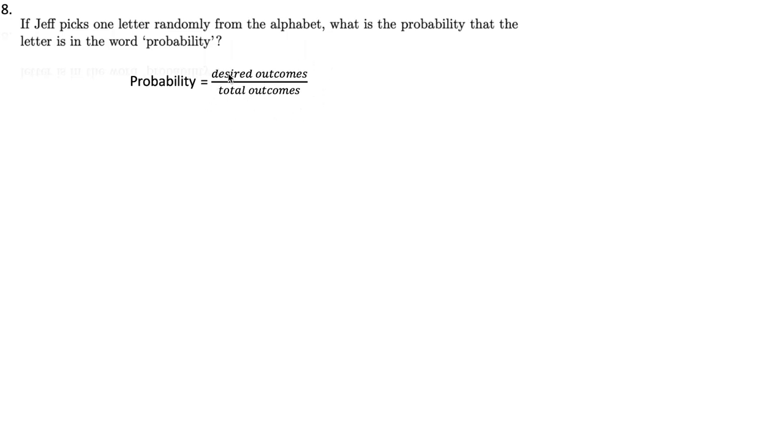The number of desired outcomes are the letters in probability. We have a couple that repeat, like the B and the I. If we remove the B and the I, we only have nine unique letters.